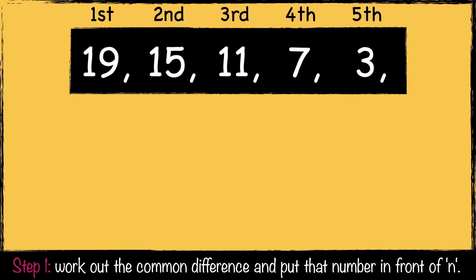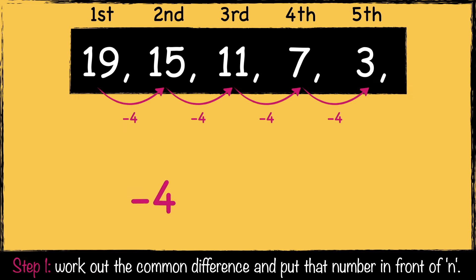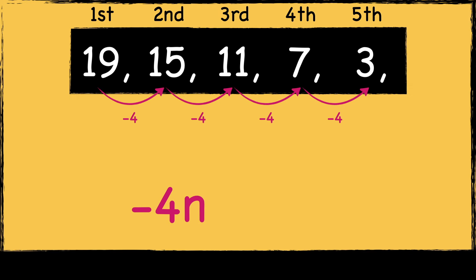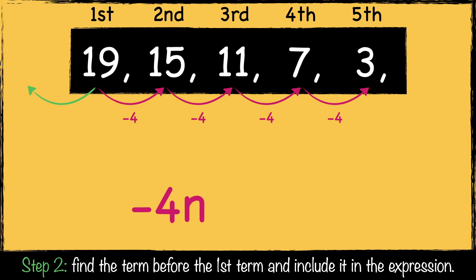Here's the next sequence: 19, 15, 11, 7, and 3. First, we need to work out the common difference. In this sequence, we're subtracting 4 from each number, so the first part of this expression is minus 4n. As this sequence subtracts 4 each time, we need to add 4 to find the previous term. So 19 add 4 is 23. So the nth term expression for this sequence is minus 4n add 23.